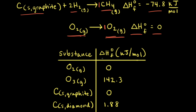Standard enthalpies of formation in kilojoules per mole are often found in the appendices of many textbooks. If you look in the appendix, you'll see the standard enthalpy of formation for diatomic oxygen gas, O₂, is equal to zero. Ozone, which is O₃, also exists under standard conditions; however, it's not the most stable form of oxygen under standard conditions, and therefore its standard enthalpy of formation is not zero — it's 142.3 kilojoules per mole.